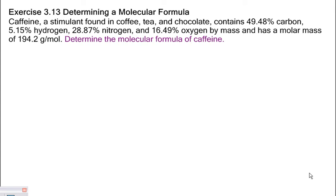Now that we've discussed molecular and empirical formulas, let's go over another type of empirical molecular formula problem. Often you'll be given the percentage by mass of a compound — carbon, hydrogen, nitrogen, all the elements that go into it. The procedure just adds one little step, and it's actually a little bit easier. Anytime you're given the percentage, if there's an additional element where the percentage is not given, simply subtract from 100 to figure out the percentage of that missing element.